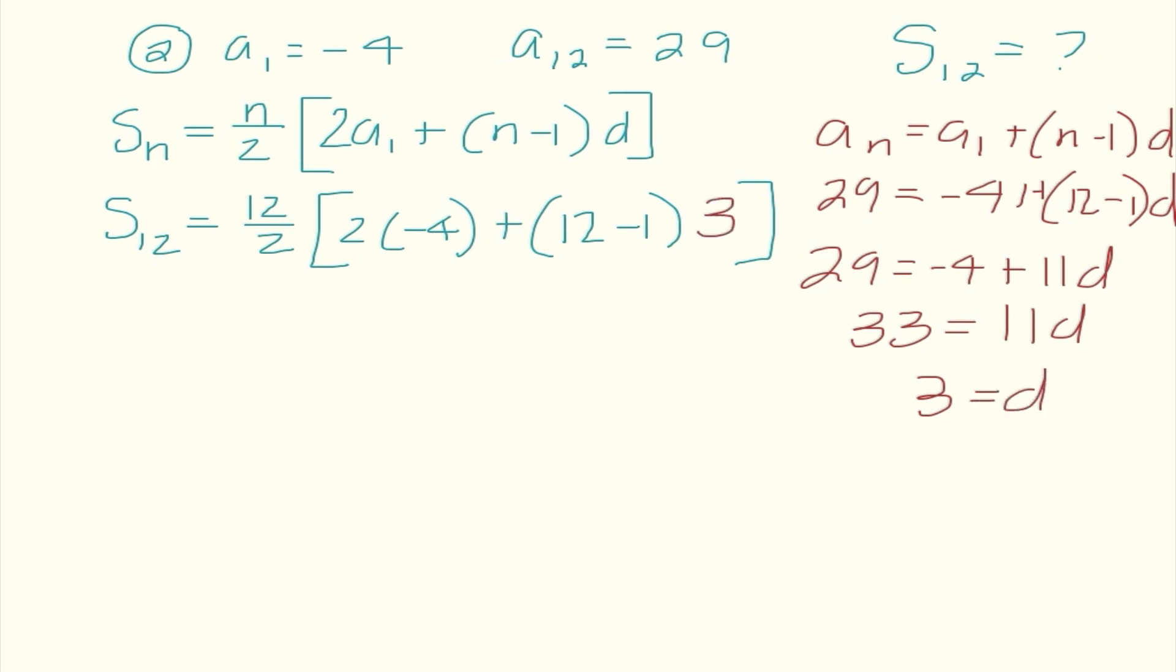So at that point, I can substitute 3 into our equation. So that's why this one is a little bit tougher is because I have to use that extra step to find the common difference. Now I can go ahead and say 6 times negative 8 plus 33, which is 6 times 25 or 150. So we can go ahead and use either method. I get the same answer regardless.